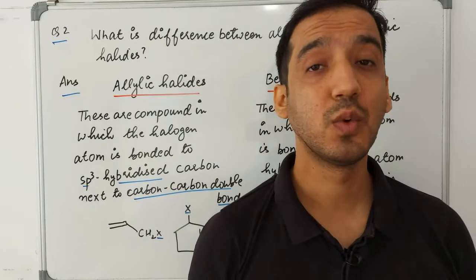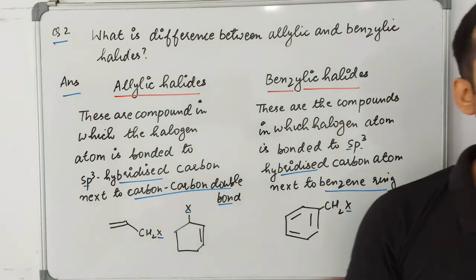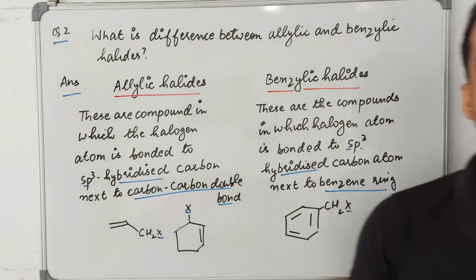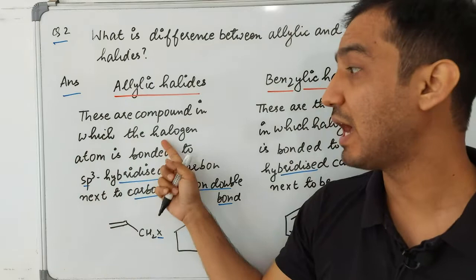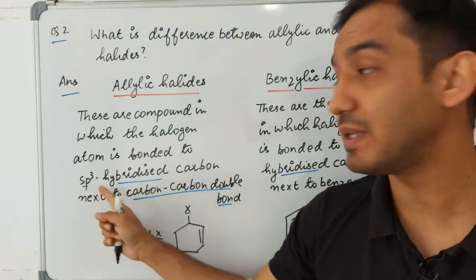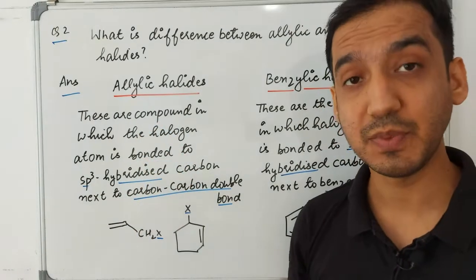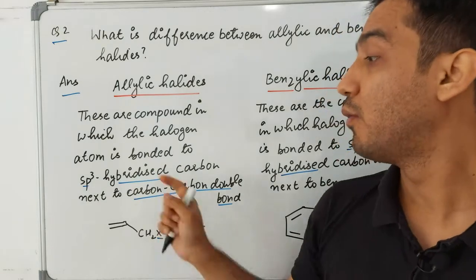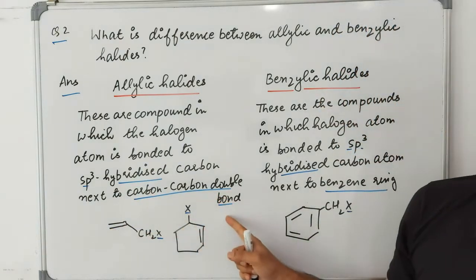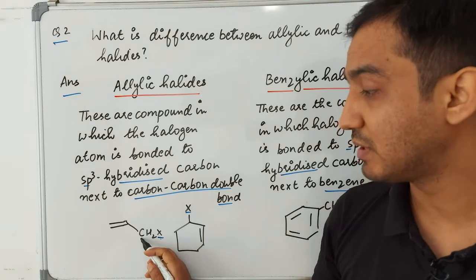The next question is: what is the difference between allylic and benzylic halides? Allylic halides are compounds in which the halogen atom is bonded to an sp3 hybridized carbon which is next to a carbon-carbon double bond.